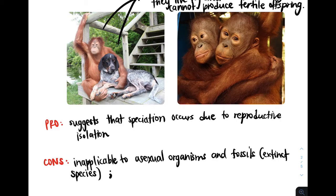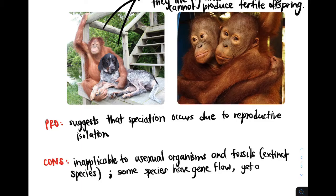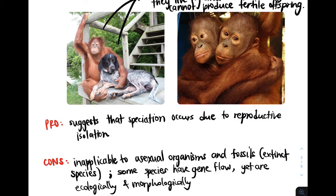Another con to the biological species concept is that typically we say different species do not have gene flow between them. But there are some species that do have gene flow, yet they are ecologically and morphologically different, so we consider them different species even though they have gene flow between them.